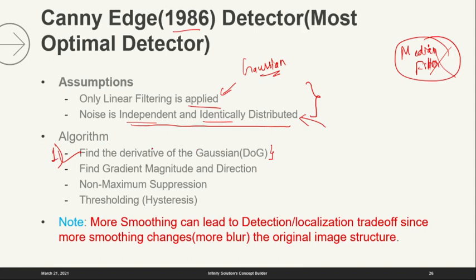The gradient has magnitude as well as direction — these are two very important steps. Then, non-maximum suppression: suppress pixels which are not maximum. And then, hysteresis thresholding. We will see all this in the very next slide. The important note here is that we are using Gaussian smoothing with some sigma value — variance or standard deviation. More smoothing means more blurring, which can deteriorate our image structure, so there is always a tradeoff between edge detection and localization.